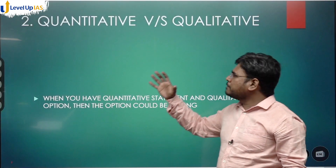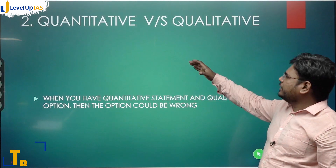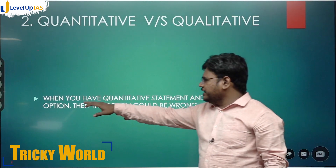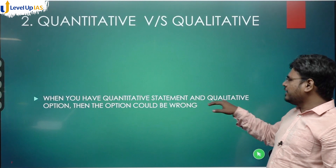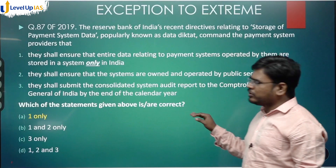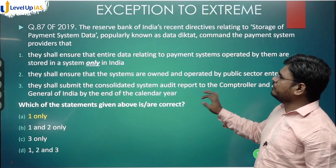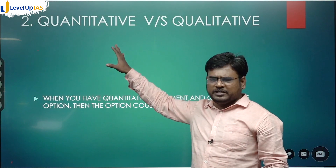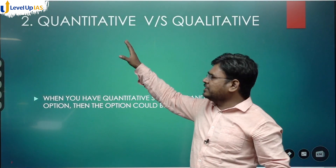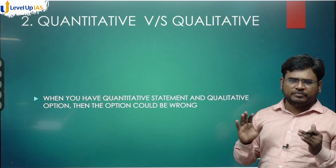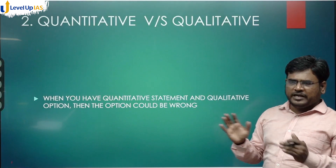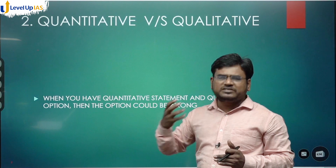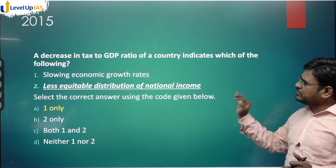The second trick is quantitative versus qualitative. When you have a quantitative statement and qualitative options, then options could be wrong. A quantitative statement shows some quantity, while a qualitative statement expresses a general idea. We will go through questions for this.